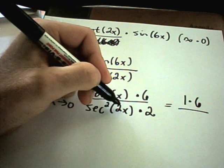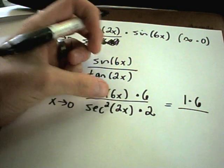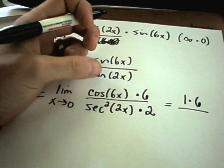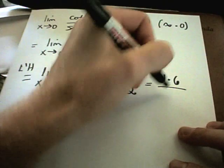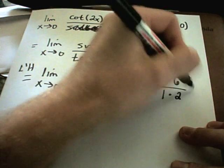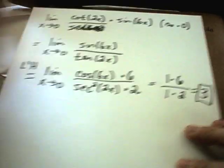You'll get secant squared of 0. So secant of 0, that's 1 over cosine of 0. Cosine of 0 is 1. So secant squared of 0 is also going to be 1. So we're simply left with 1 times 2, or 3 is our solution.